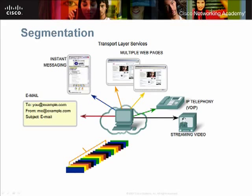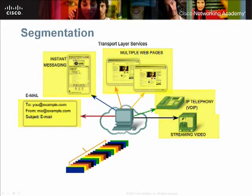In this graphic, the user is working with many applications simultaneously. These include email, instant messaging, multiple web pages, IP telephony, and streaming video. Each type of traffic is represented by a different colored arrow.